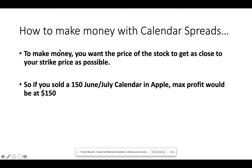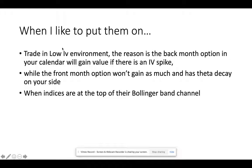How to make money with calendar spreads: you want the price of the stock to get as close to your strike price as possible. So if you sold the 150 June-July calendar in Apple, max profit would be at 150 if the stock approached and stayed right there during June expiration. When do I like to put them on? You want to trade this in a low implied volatility environment. The reason is because the back month option in your calendar will gain value if there's a spike in IV, more so than that front month option, because back month options have a higher sensitivity to volatility — their vegas are higher.